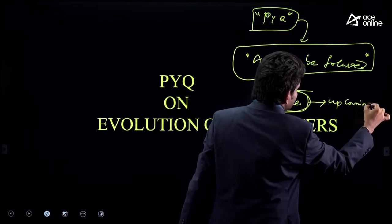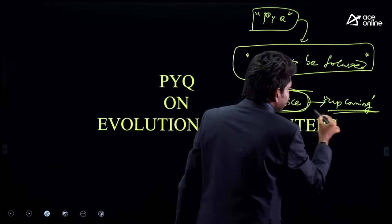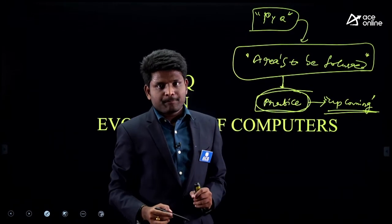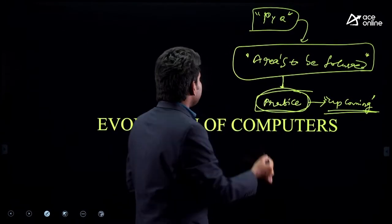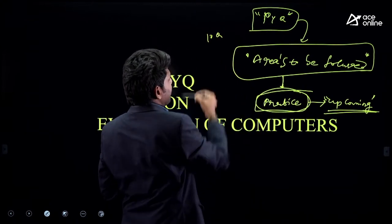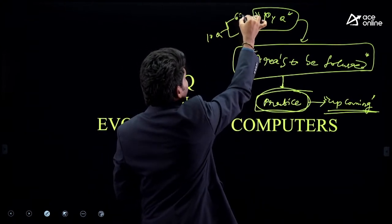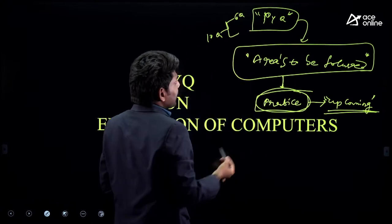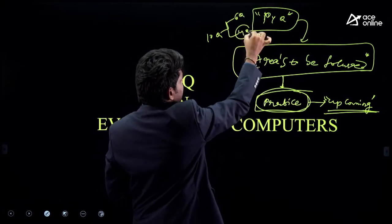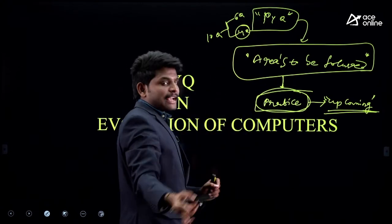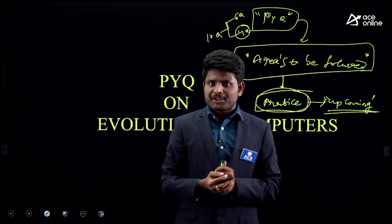They are not repeating the question, but giving questions from the same topic again and again. If they can make ten questions from a particular topic and have covered six in past exams, the remaining four questions they may ask in coming exams. That is the simple strategy here.